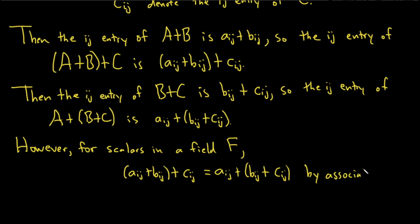We have associativity in the field. The entries themselves, the entries of the matrices, have that property because they're elements of the field, and we have associativity of addition in a field.